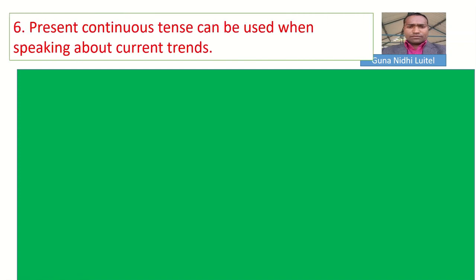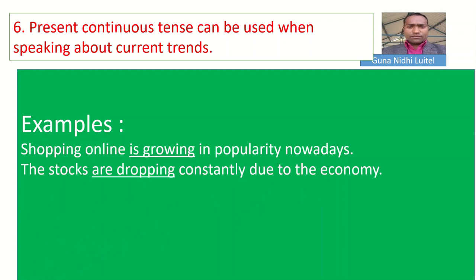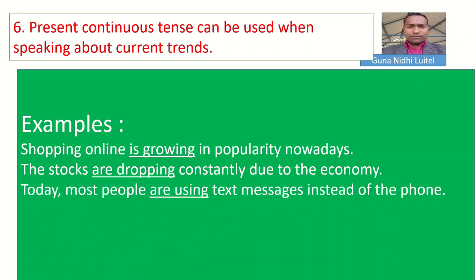Okay, now let us see the next rule. Present continuous tense can be used when speaking about current trends. Current trends means what is exactly happening these days. 'Online shopping is growing in popularity nowadays — everybody likes online shopping.' 'The stocks are dropping constantly due to the economy — this is happening day by day.' 'Today, most people are using text messages instead of phone calls.'